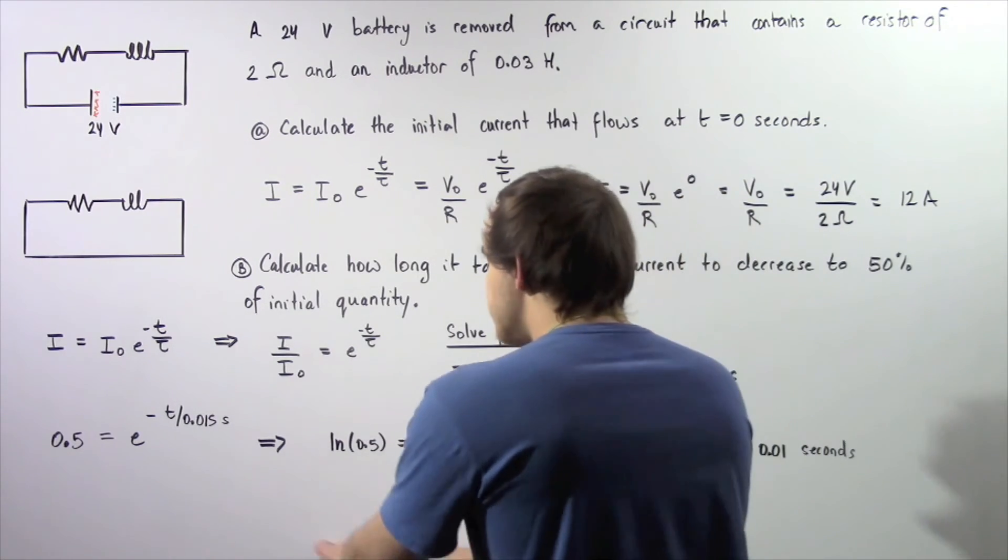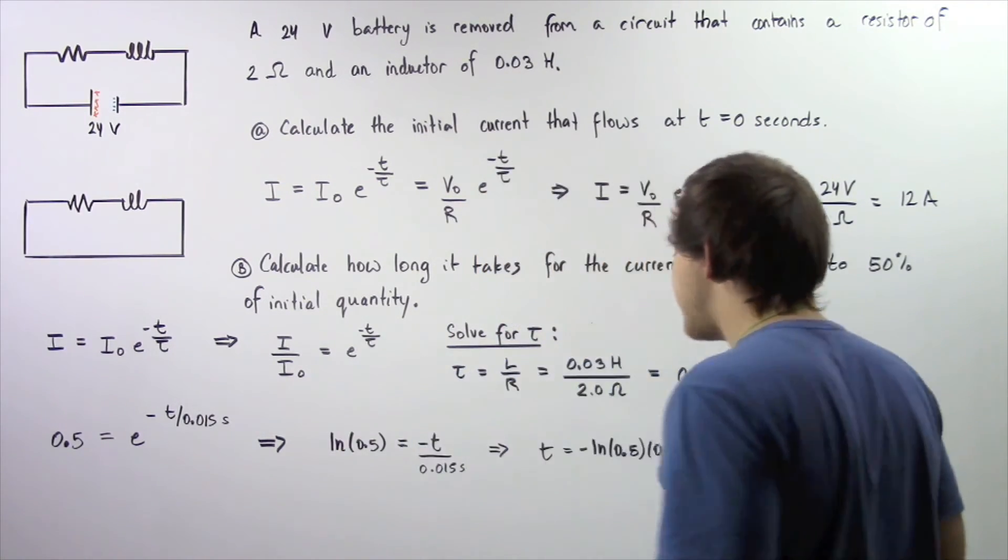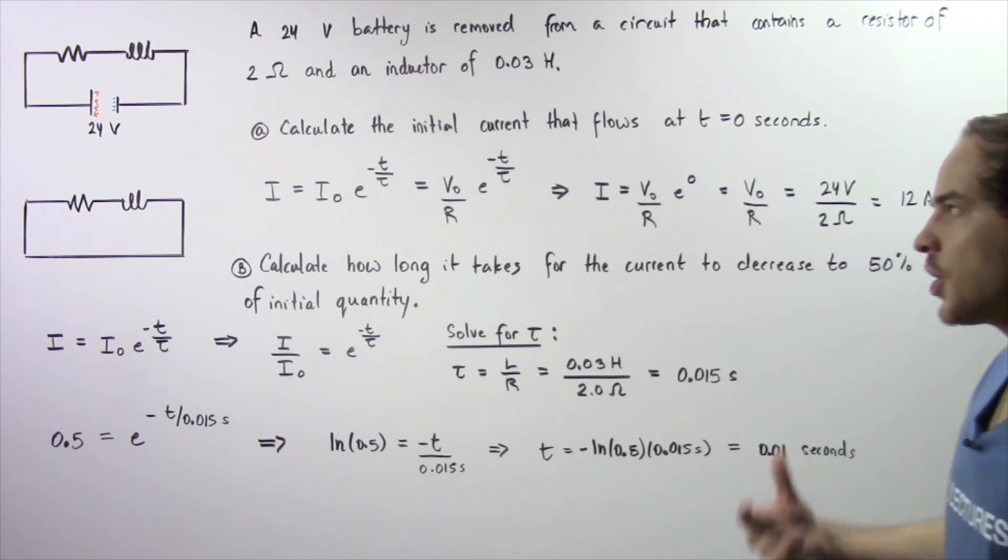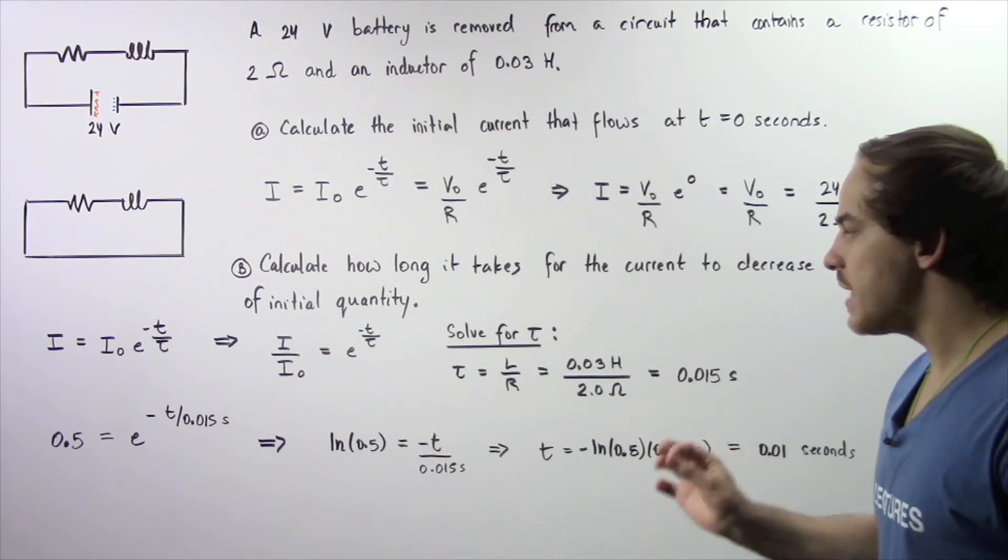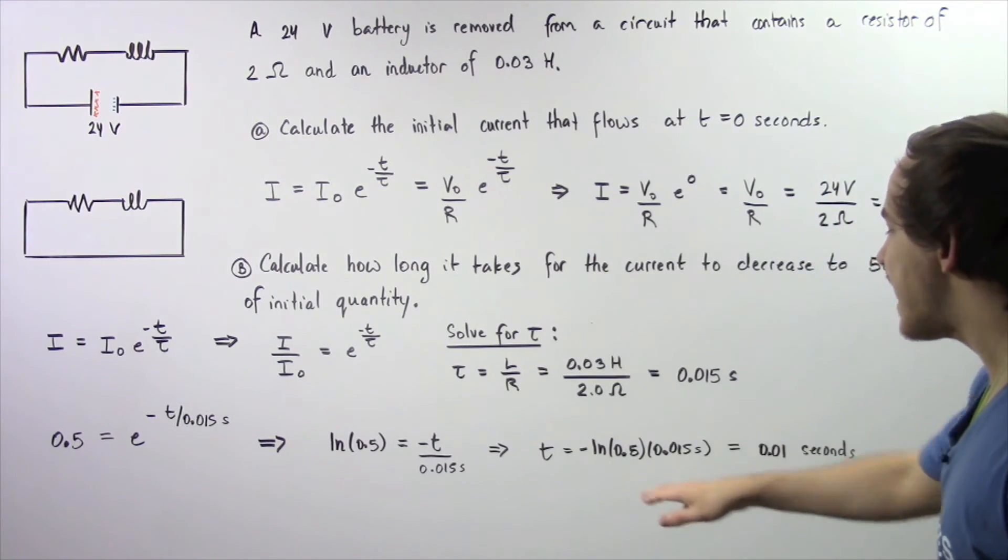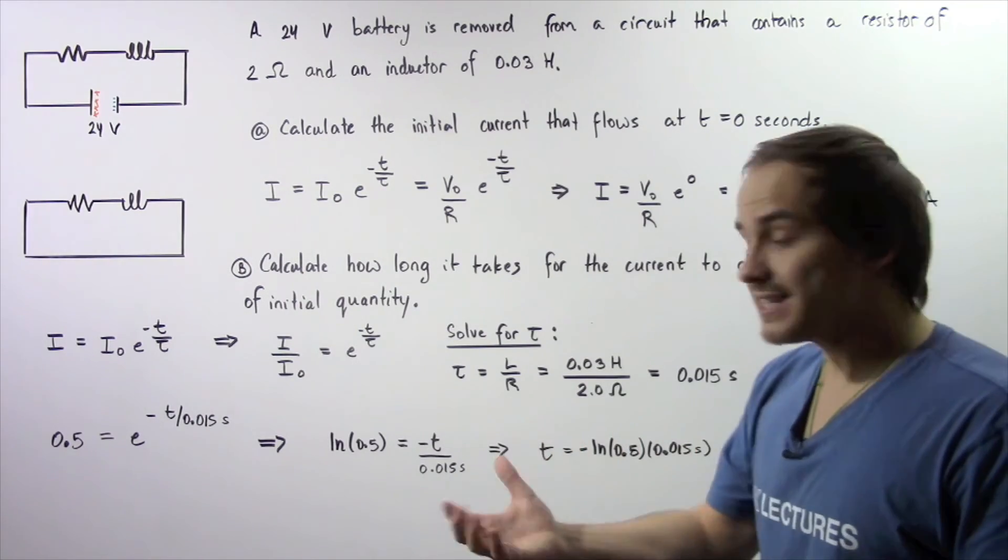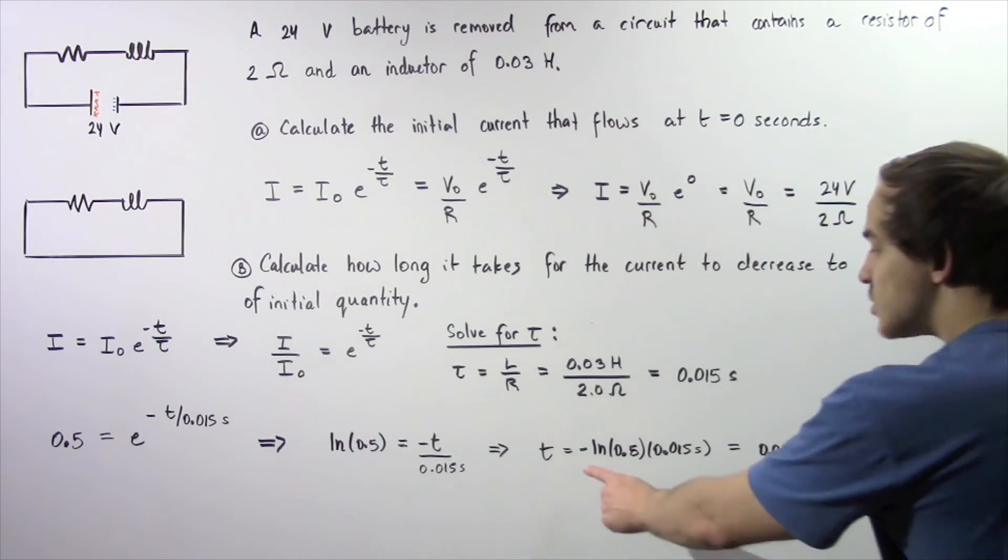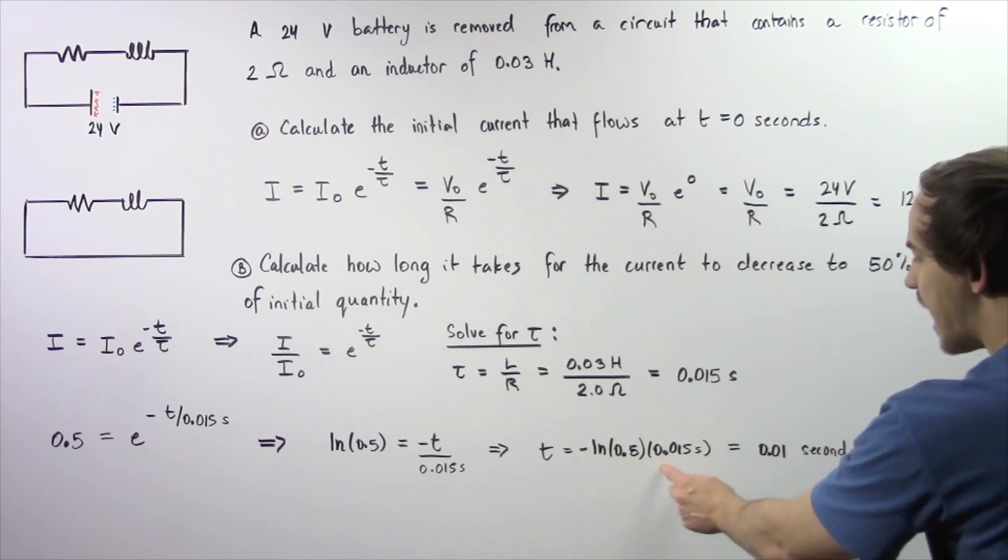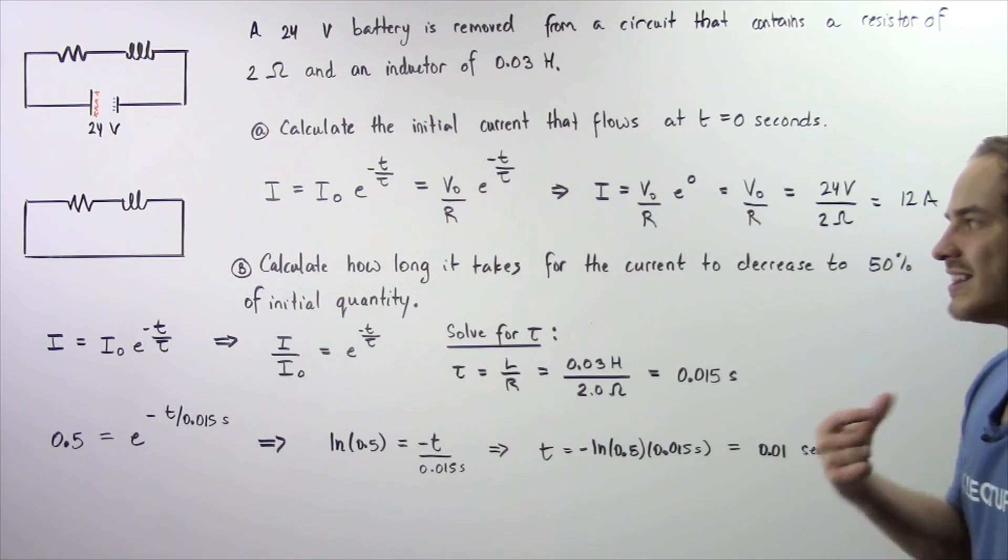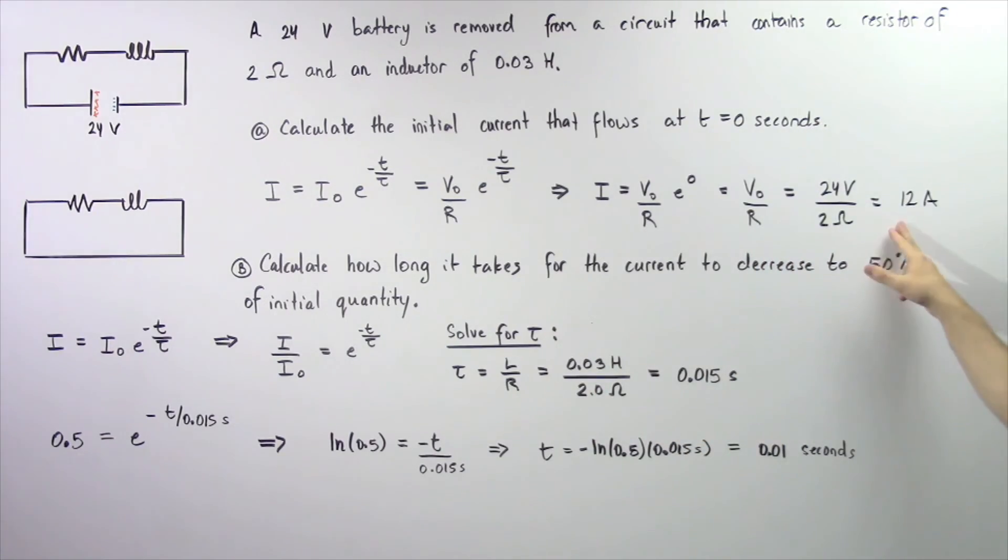Let's bring this quantity to this side and multiply both sides by negative 1. The time it takes for our initial quantity of current to decrease to 50% of that amount is equal to negative natural log of 0.5, which is a negative value, about negative 0.69. So negative negative becomes positive, multiply that by 0.015 seconds, and that gives us about 0.01 seconds. This is the quantity of time it takes our electric current to go from a quantity of 12 amps to a quantity of 6 amps.